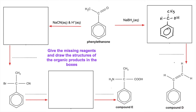To get from the secondary alcohol to compound D, which is an alkene, we need to remove H2O — so we need to dehydrate it, or eliminate H2O. We do that by reacting it with a strong acid, and either of those two would do there.